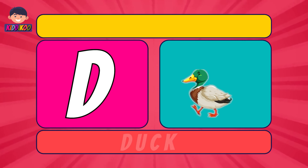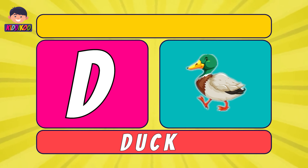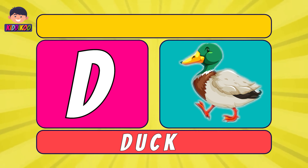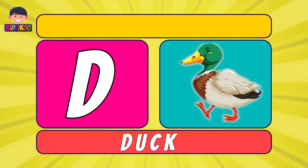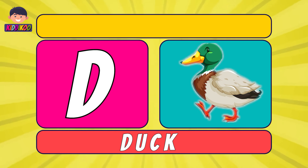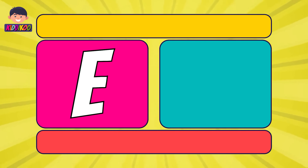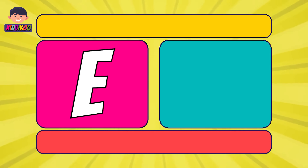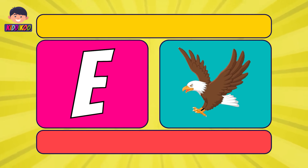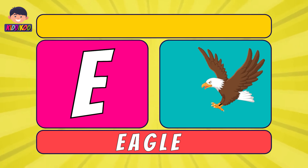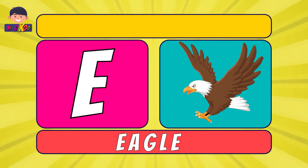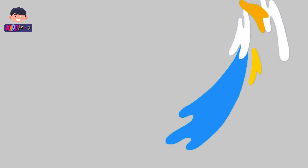Next letter is D. D for Duck. Duck. Next letter is E. E for Eagle. Eagle.